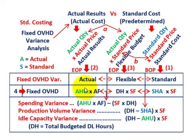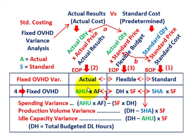I've got everything color-coded here. Based on our fixed overhead, the actual, flexible, and standard amounts are each just taking some hours used in terms of direct labor times some fixed overhead rate. Our actual amount is taking the actual hours used for the period based on direct labor hours.